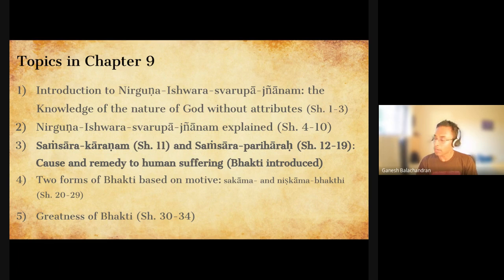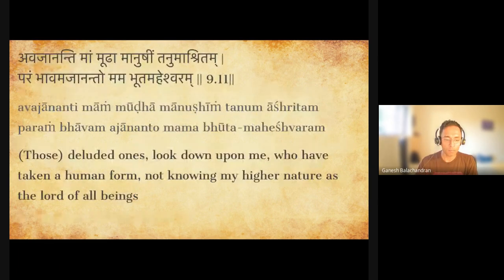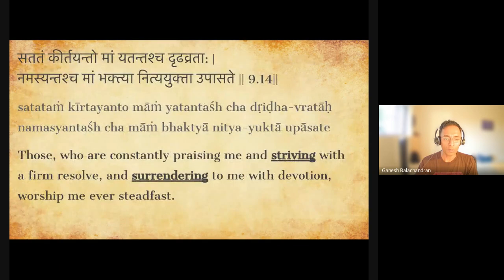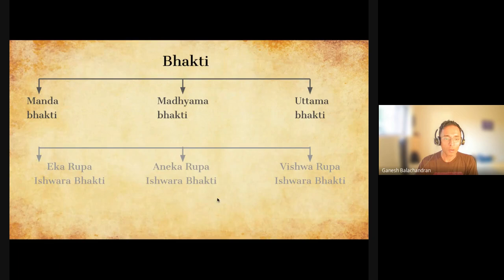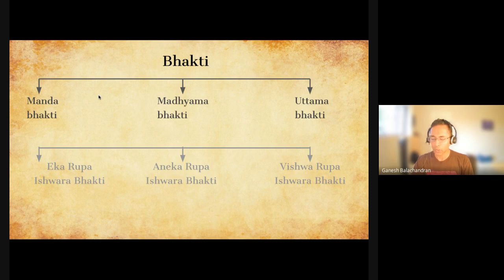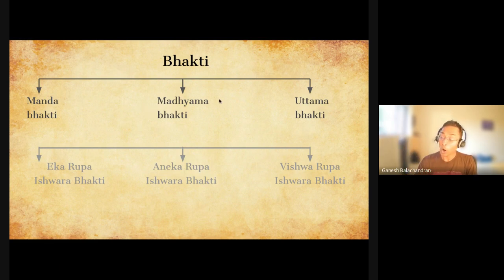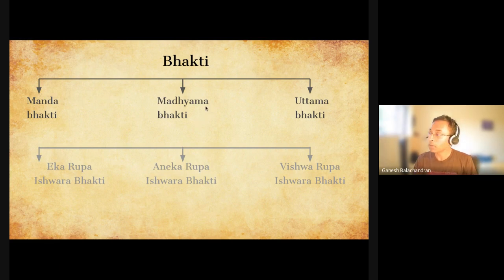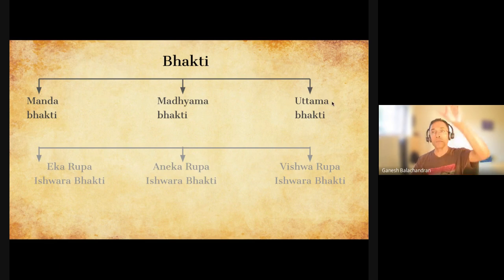Bhakti can be classified in many ways. One way is based on level: Mandha Bhakti is dull Bhakti — that is all Sakama, where God is a means to get something. Madhyama Bhakti is when God becomes the end in itself — that is your end goal. And then Uttama Bhakti: you realize Aham Brahmasmi, the same entity Brahman is in me too. That is Uttama Bhakti.